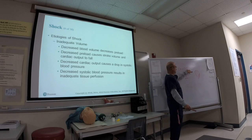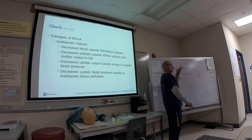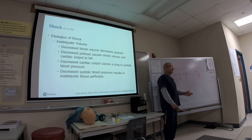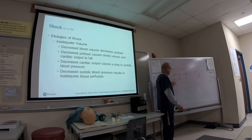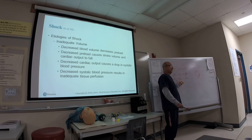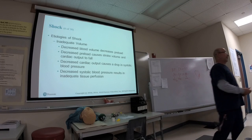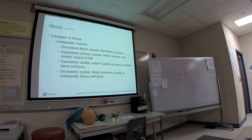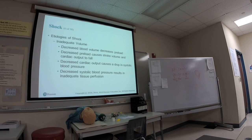Cardiac output is more significant for us clinically. Normal cardiac output is 4–6 liters per minute. Cardiac output equals stroke volume times heart rate. The average stroke volume is 70 milliliters. Stroke volume is the amount of blood ejected from the left ventricle with each contraction.